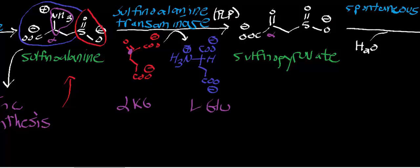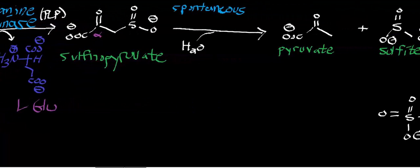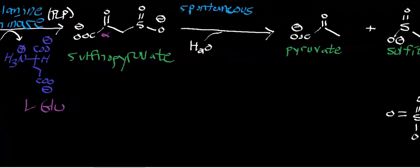Now, sulfenopyruvate is going to undergo a spontaneous hydrolysis, meaning that it has a negative delta G, and it occurs non-enzymatically. And so the bond that's going to be cleaved is this one right here. And in the process, we generate sulfite and pyruvate.